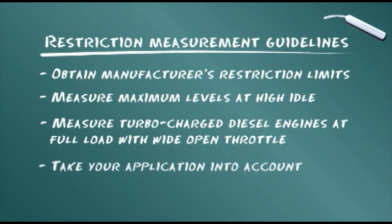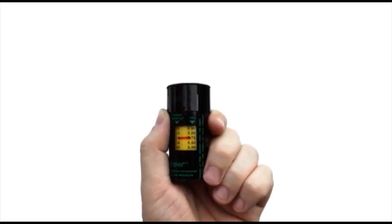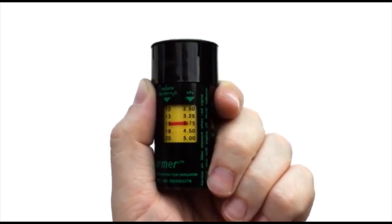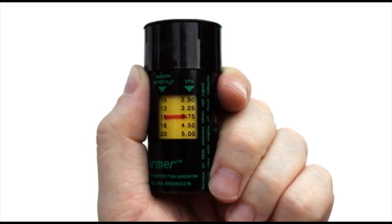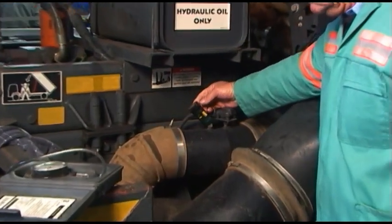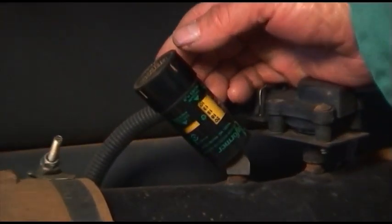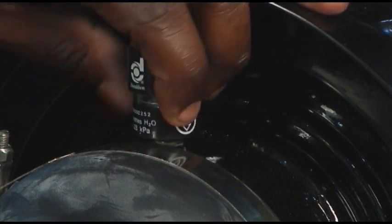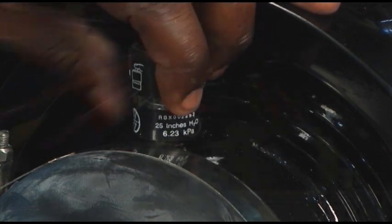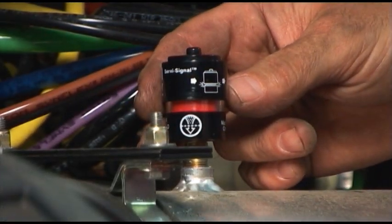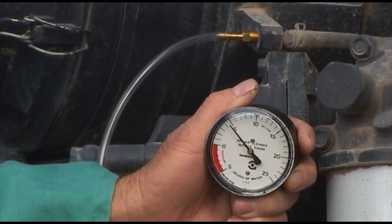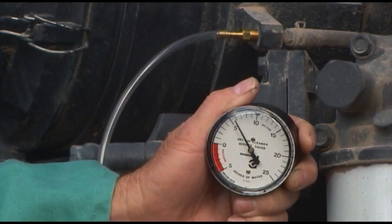Turbocharged diesel and gasoline engines are measured at full load with a wide open throttle. Methods for measuring restriction for on-road and off-road applications may vary. The use of a graduated locking step restriction gauge, however, will give an actual peak reading during vehicle operation in each environment. Restriction indicators mounted on the air cleaner system are recommended for monitoring restriction levels and indicating when servicing is due. For testing of initial restriction and confirming remaining filter life, we recommend the greater accuracy of a clock type restriction gauge or water manometer.